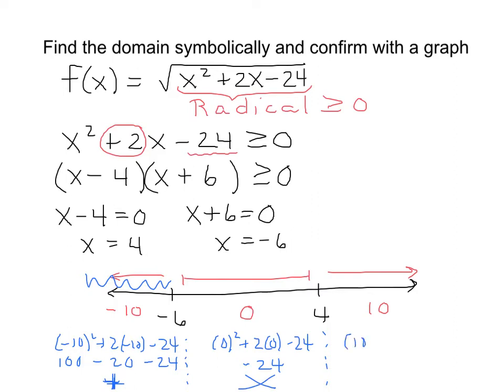And then finally 10. 10² + 2(10) - 24. That'll give us 100 + 20 - 24. We can see we have plenty of numbers in the positives to keep us positive. So in that interval, we're positive.